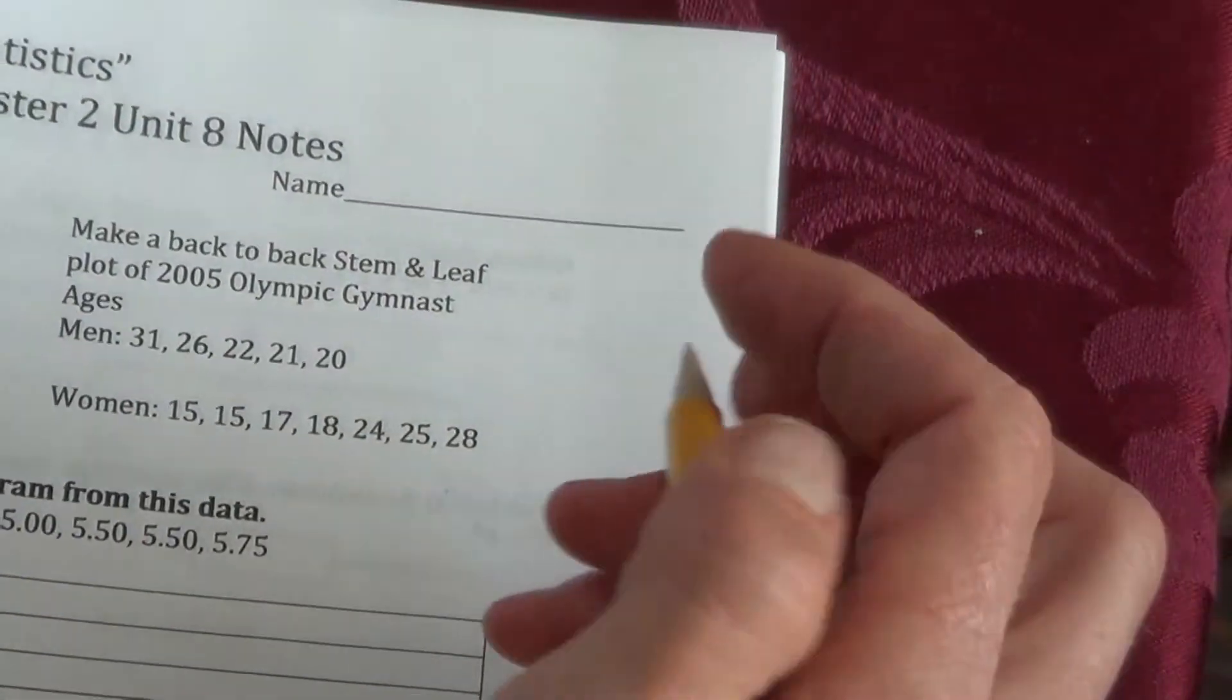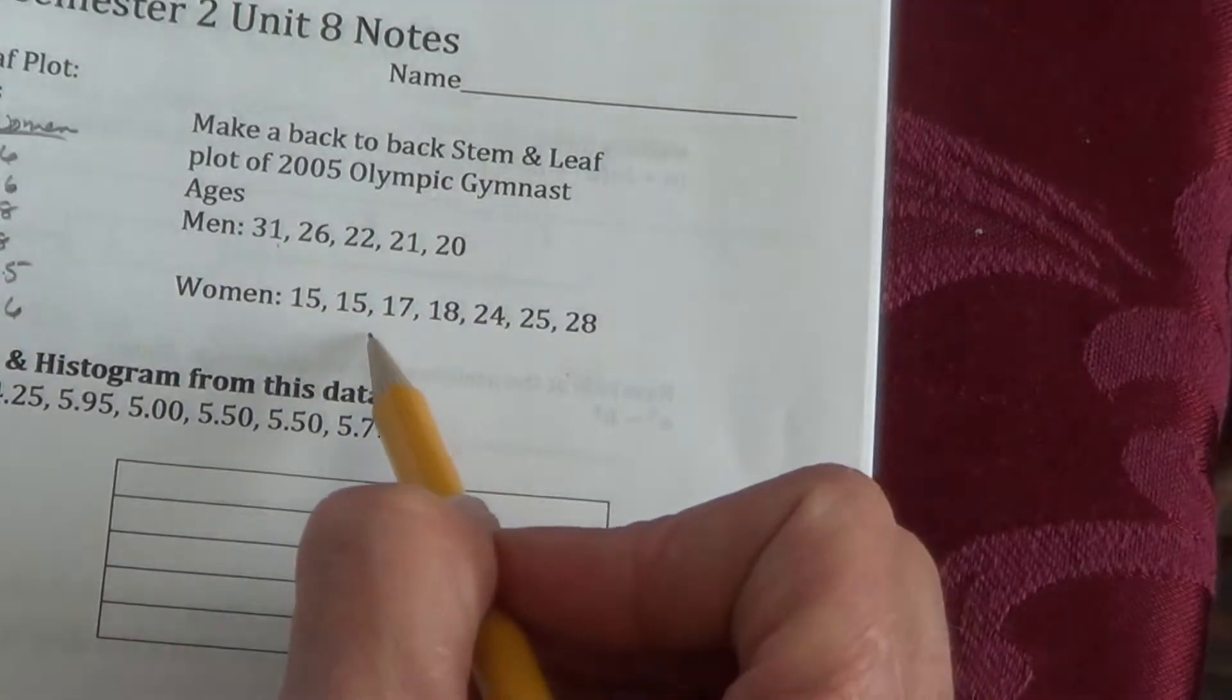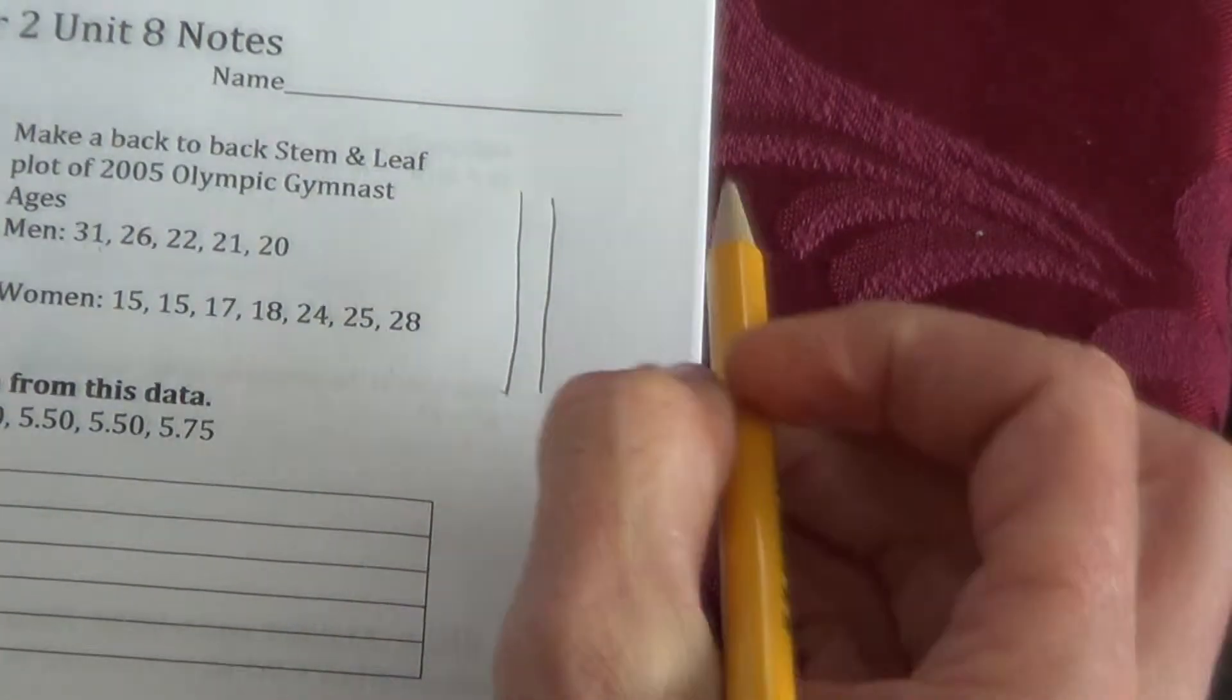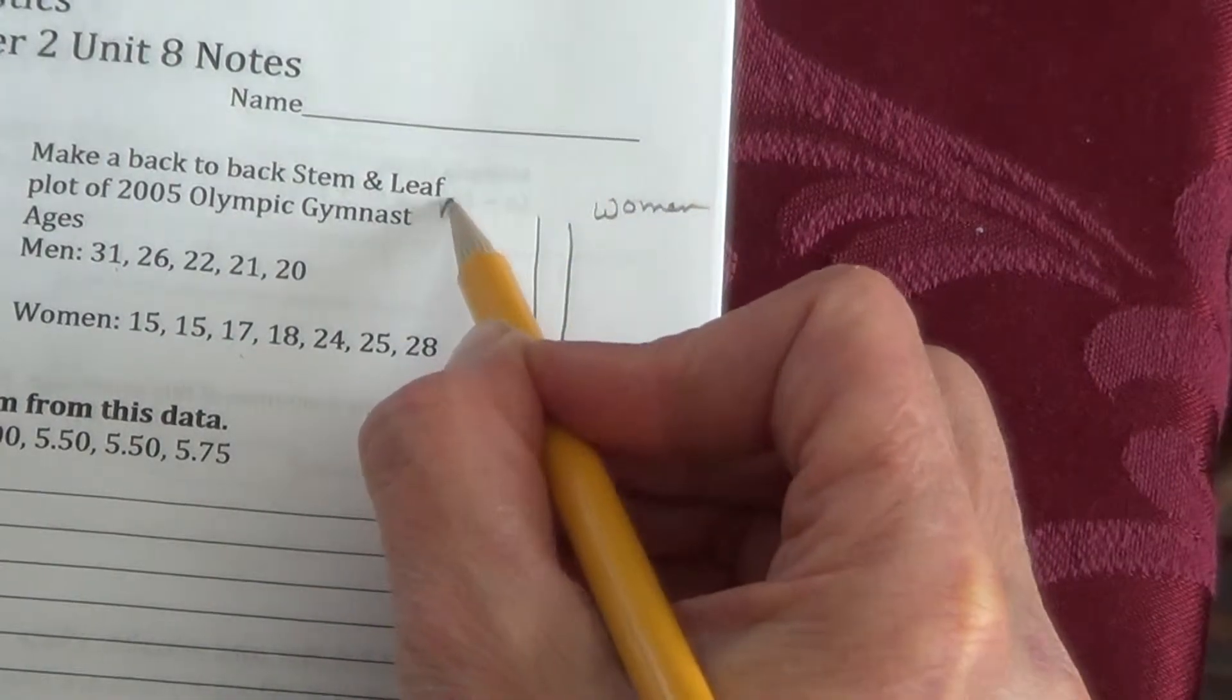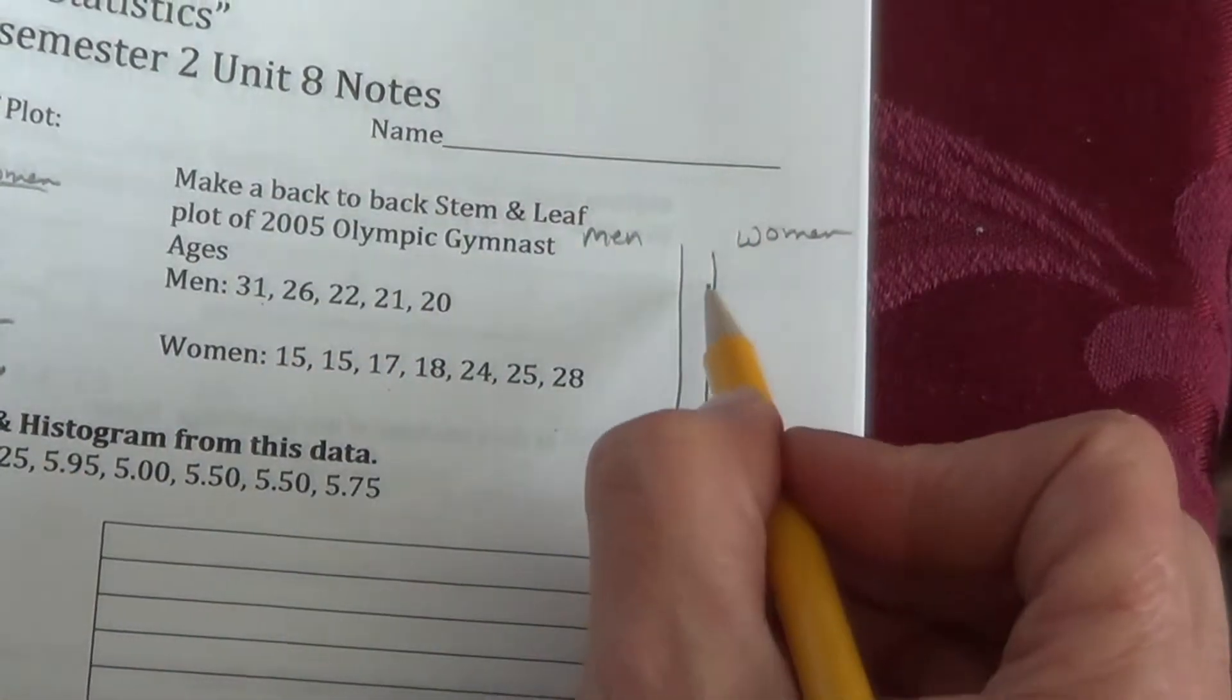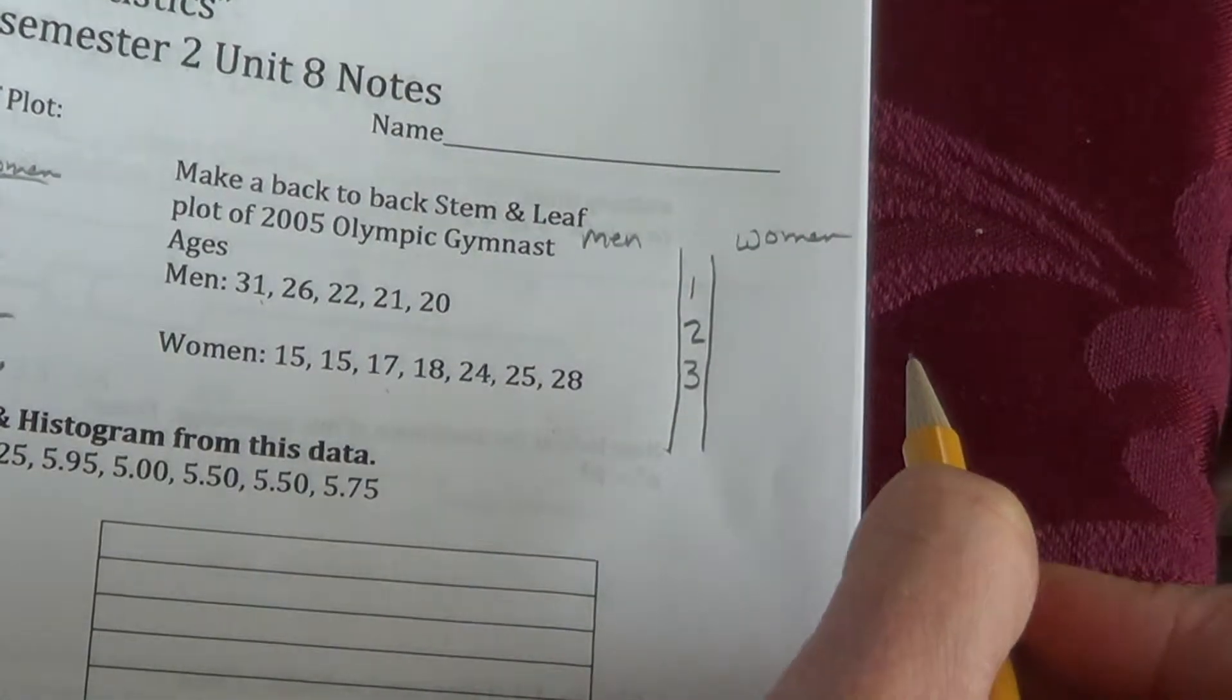Now it says, make a back-to-back stem and leaf plot of the 2005 Olympic gymnast ages for men and for women. Okay? So now we need to get our stem. We'll write women. We'll keep it the same as theirs was. Now their stem went down, or up in order as it goes down, so we'll go with one, two, three as well. Okay?